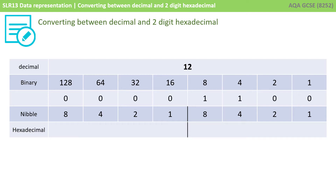So the first thing to do is to write the number 12 out in binary. If you need a recap of how to do this, watch our other video which covers this. But effectively you can see I've got a one in the eight column and a one in the four column. Eight plus four is 12.